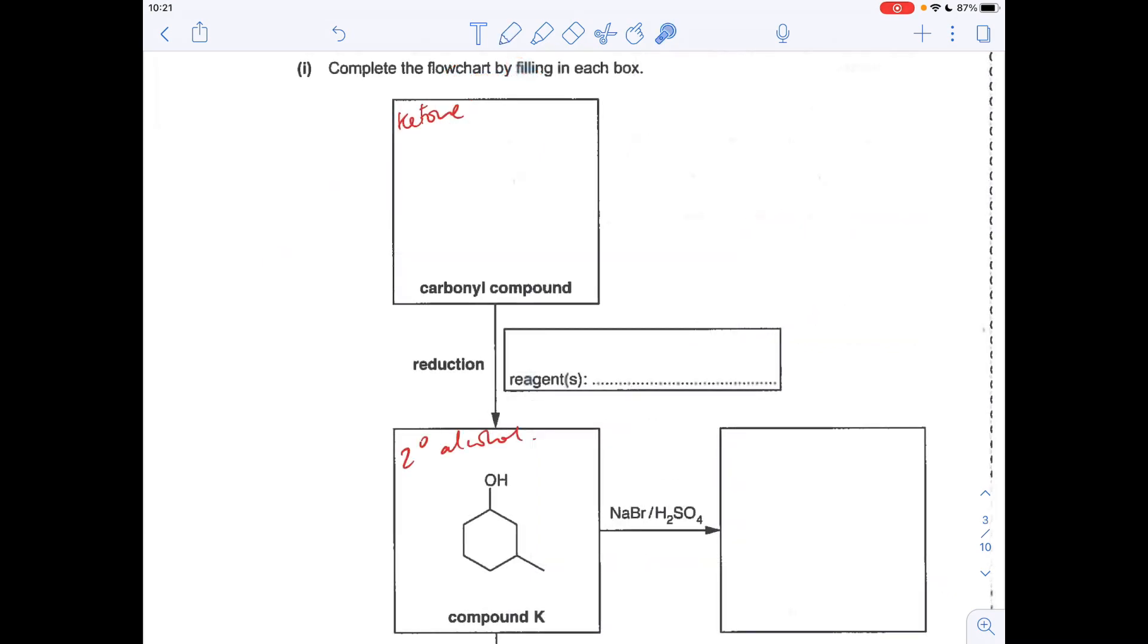Moving on to the next question, we've just got to complete this flow chart. So we'll go this reaction first. So we're going from a carbonyl compound, so an aldehyde or a ketone, to compound K, which is a secondary alcohol. So the OH carbon has got two carbons directly attached.